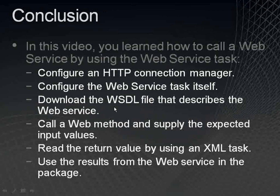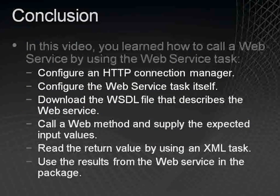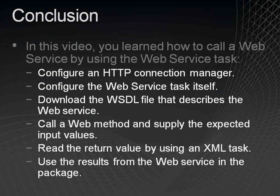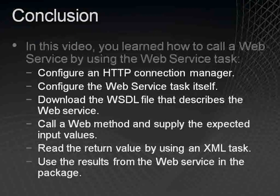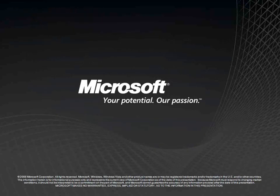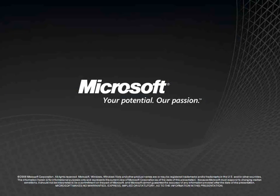In this video, you learned how to call a web service by using the web service task in Integration Services, and to use the results that you got back from the web service in your package. As part of that demonstration, we saw how to configure an HTTP Connection Manager, to configure the web service task itself, to download the WSDL file that describes the web service, to call a web method and supply the expected input values, to read the return value by using an XML task, and finally how to use the results from the web service in your Integration Services package. We hope that you've gained new information and useful skills from this video. After you close this video and return to the web page, you'll find some other Integration Services how-to videos that are available for you to watch. Thank you.